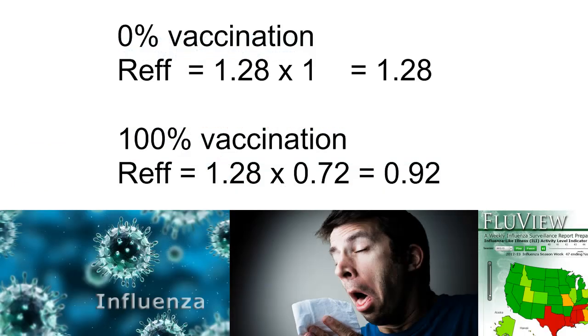Let's plug that into two formulas, one showing 0% vaccination and the other 100% vaccination by a 28% effective flu shot. At 0% vaccination, the effective reproductive rate is the product of the R₀, 1.28, times 1, representing 100% susceptibles, producing an effective reproduction rate of 1.28, which represents epidemic growth of flu.